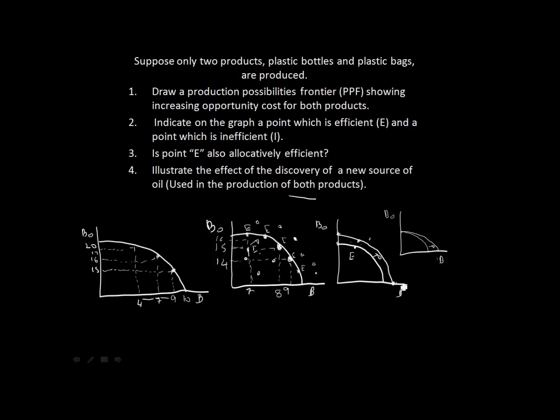That's it for this question. Remember your definition for production possibility frontier: a graph which shows the maximum combination of two goods we can produce if we fully utilize all of our inputs. Remember: efficient points are on the curve, inefficient points are on the inside of the graph, and impossible points are on the outside — unless a new resource discovery causes an outward shift. Also remember to check whether the new resource is used in both products or only one. Thanks for watching — check out tutomeonline.co.za for various other videos for economics and other subjects.